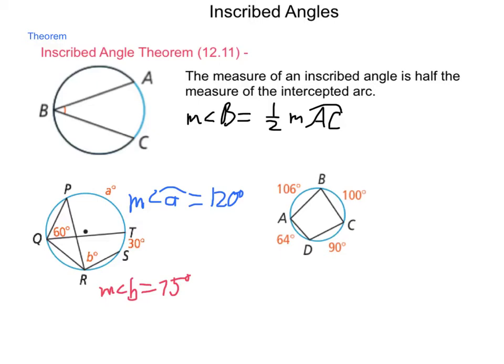So, as you can see, we can begin looking at different relationships that exist and fill in all the parts that remain with them. So, as we move through, other relationships will also come up. There are three corollaries that go along with this inscribed angle theorem.